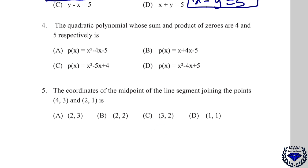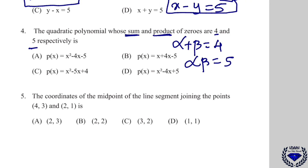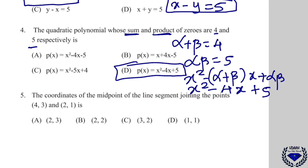Question number 4: find the quadratic polynomial whose sum of zeros (α + β) is 4 and product (αβ) is 5. Using the formula X² − (α + β)X + αβ, we get X² − 4x + 5. The correct answer is option D.